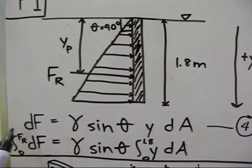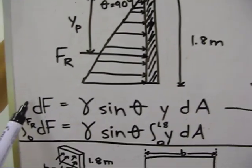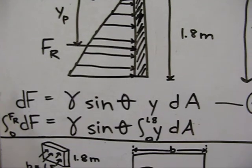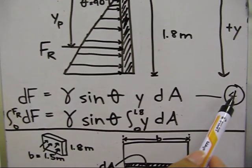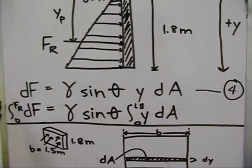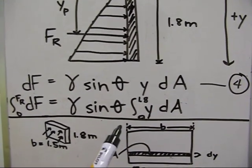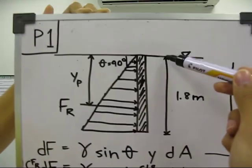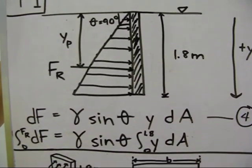To obtain a more accurate solution for the resultant force, integral calculus is used. The equation is, the differential of F is equal to gamma times sine theta Y and the differential of A, which is to be equation 4. We then get the integral of the differential of the force from 0 to the resultant force and the integral of Y from 0 to 1.8.